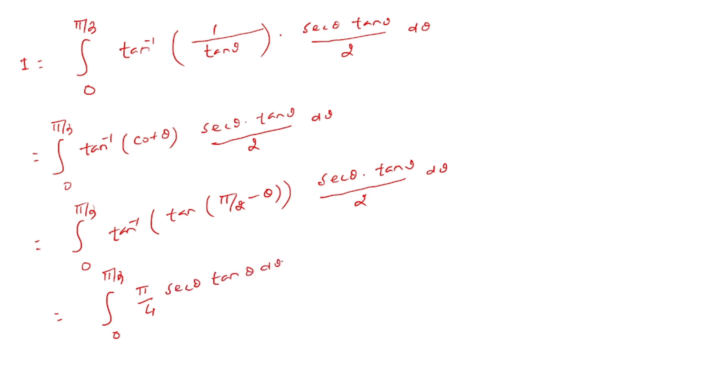Integral of sec θ tan θ dθ minus 1/2 integral from 0 to π/3 of θ sec θ tan θ dθ. This gives π/4 [sec θ] from 0 to π/3.